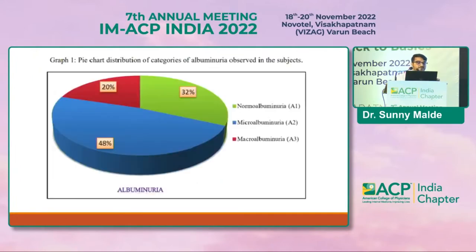Regarding results for categories of albuminuria, from 148 patients (140 analyzed), approximately 48% had microalbuminuria, 32% had normal albuminuria, and 20% had macroalbuminuria.